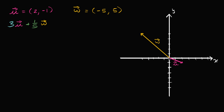And for vector w, it's negative five comma five. So its x component is negative five. If we start at the origin, we would move five to the left, and its y component is positive five, so we would move five up to get to the head of the vector, or the terminal point.